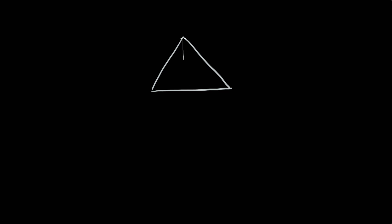Let's draw another diagram. Here is our triangle, here is our distance d, here we have angle alpha, and here we have angle beta. We're going to split the baseline X into two parts: x1 and x2. X1 goes from here to here, x2 goes from here to here — and you'll see why we do that in a moment. We should probably use tangent because we have one angle and two sides we have variables for.